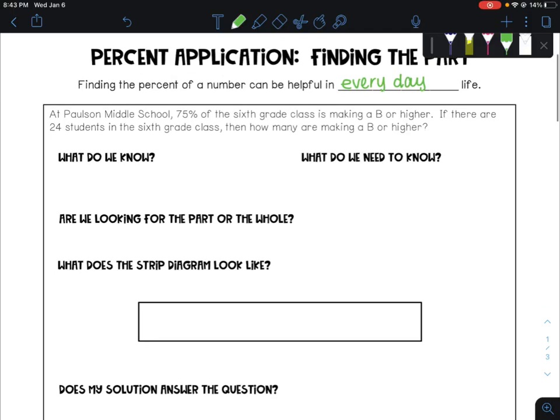For example, at Paulson Middle School, 75% of the sixth grade class is making a B or higher. If there are 24 students in the sixth grade, then how many are making a B or higher? As you can see here, we have the percent. We don't actually know how many students that is. We just know that it's 75% of all of the students.